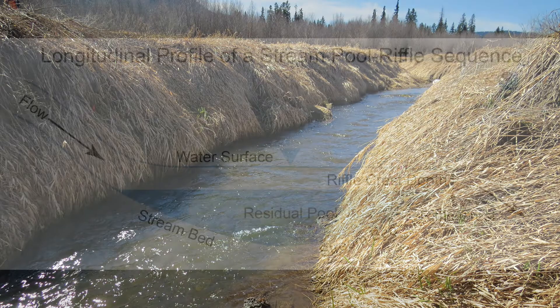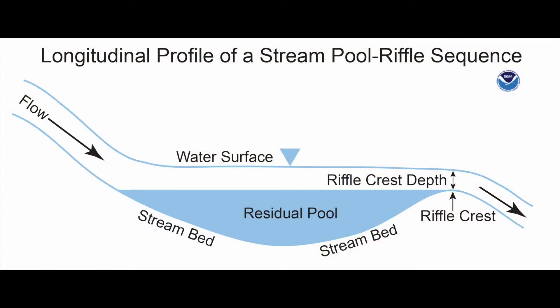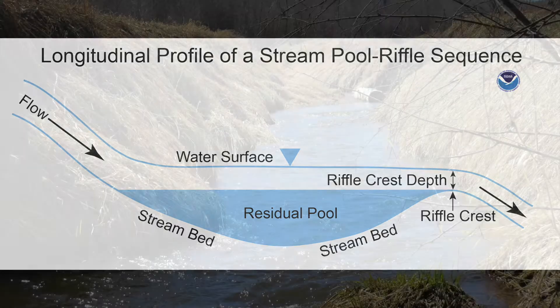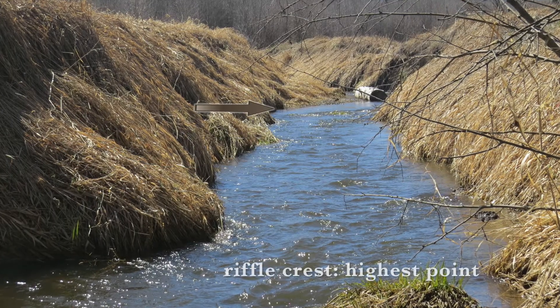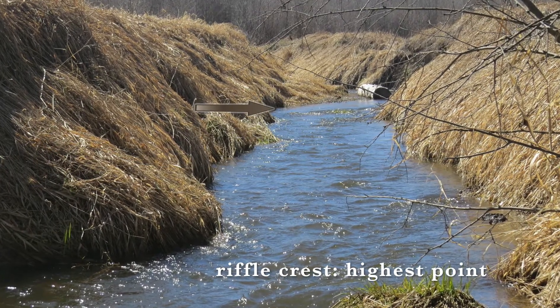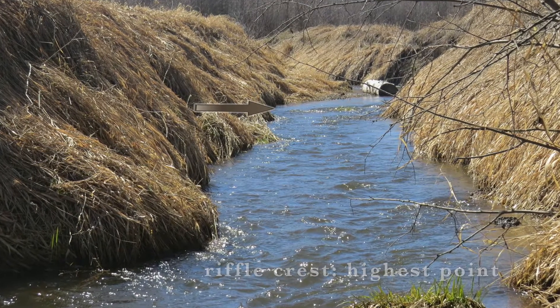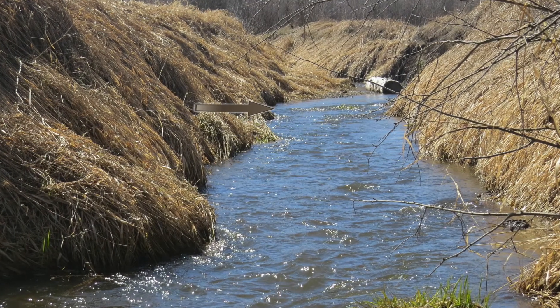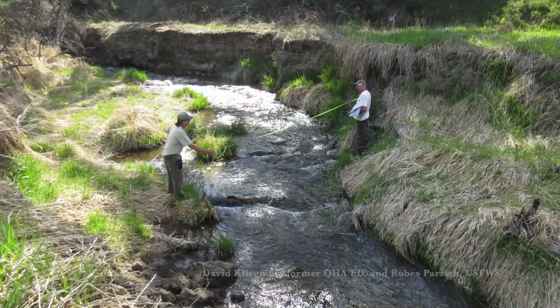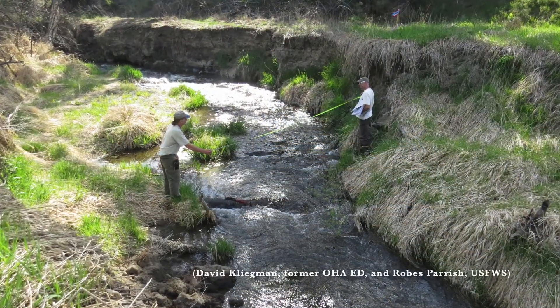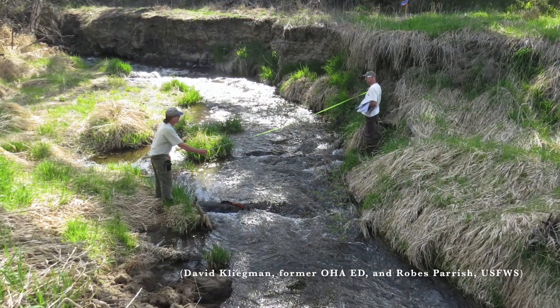The riffle crest is the highest place in a stream bed relative to an incision trench or the stream-adjacent surface of the former floodplain. By placing a BDA on the riffle crest, we're minimizing the distance between the bed of the stream and the former floodplain surface above the incision trench.